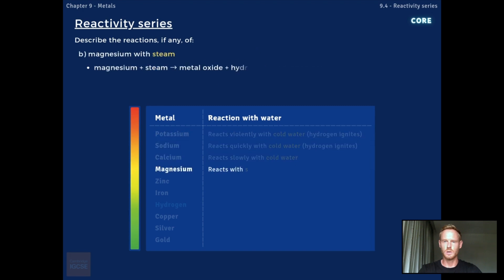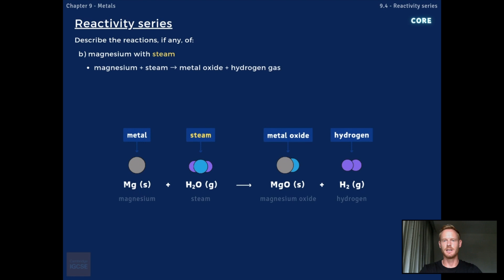Less reactive metals like magnesium don't react with cold water but do react with steam to produce a metal oxide and hydrogen gas. The steam provides the additional activation energy needed in order for the less reactive metal to lose its outer electrons and form positive ions.